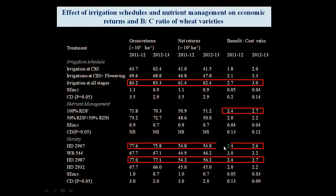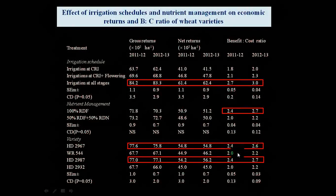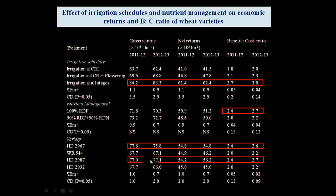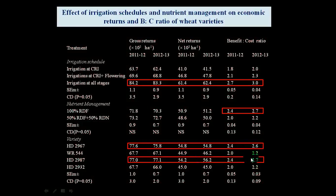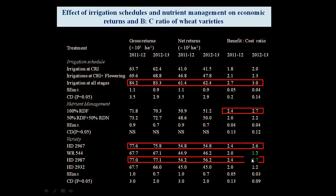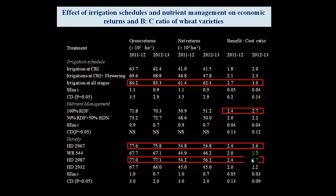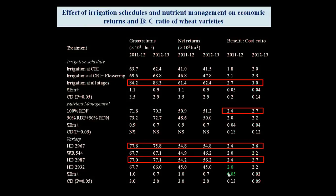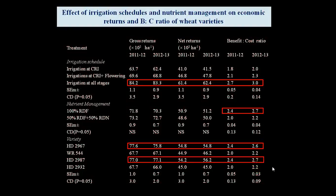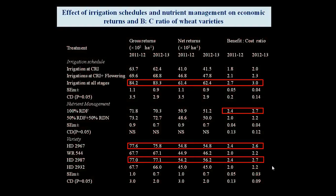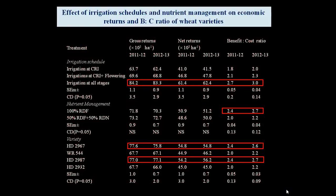Among varieties, SD 2961 gave very good gross return, net return, and benefit-cost ratio, slightly followed by SD 2987. In the second year, SD 2987 gave a very good BC ratio because the second year had adverse conditions — high rainfall and unfavorable climate for wheat cultivation. Even in those adverse conditions, SD 2987 gave good yield, which is why its BC ratio was higher than other varieties in the second year.